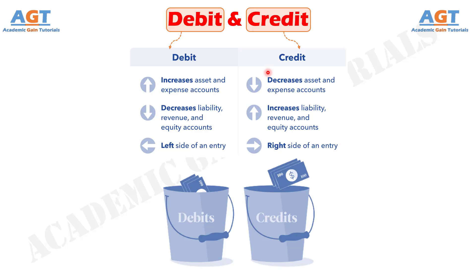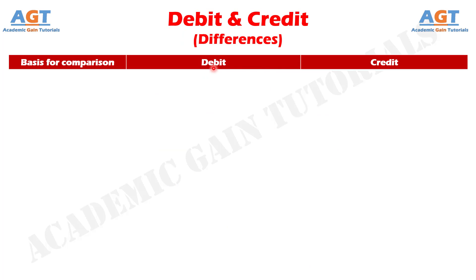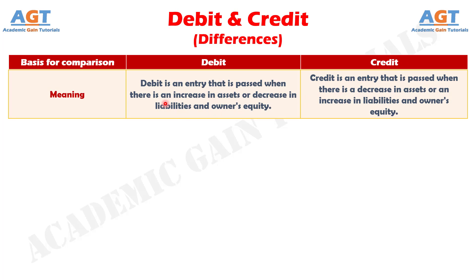Let's look into the basic differences between debit and credit in accounting in a tabular form. Difference number 1: debit is an entry that is passed when there is an increase in assets or decrease in liabilities and owners equity. Whereas credit is an entry that is passed when there is a decrease in assets or an increase in liabilities and owners equity. An entry made in an account on the left side is the debit entry or debit, whereas an entry made on the right side of the account is credit entry or credit.